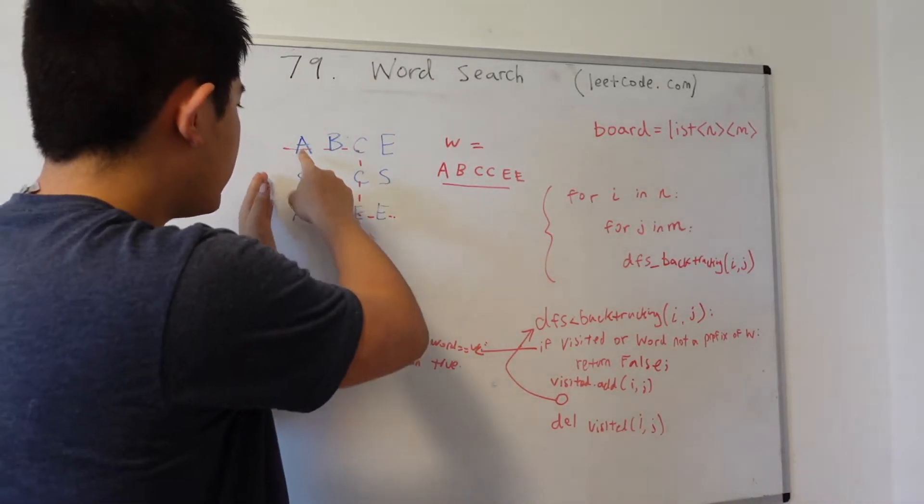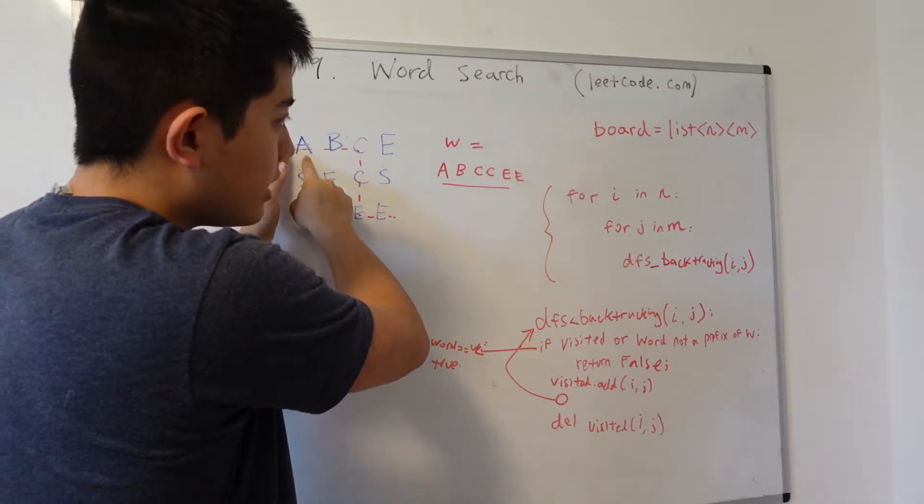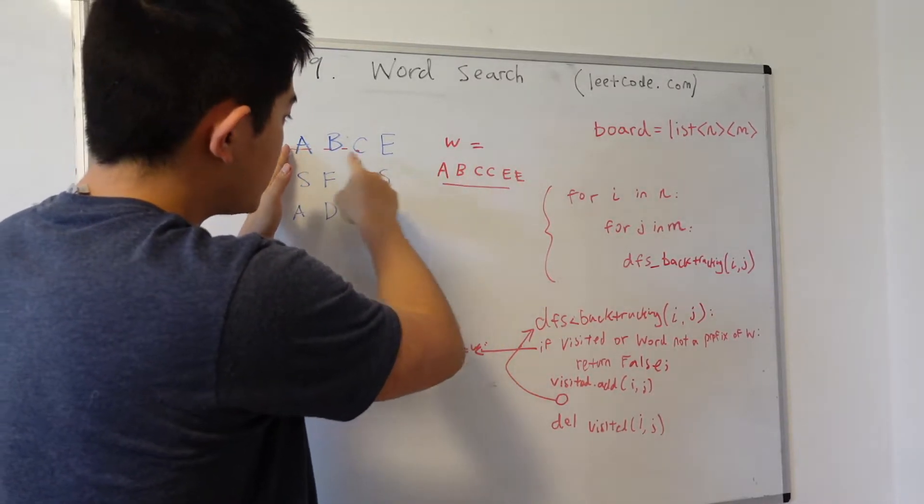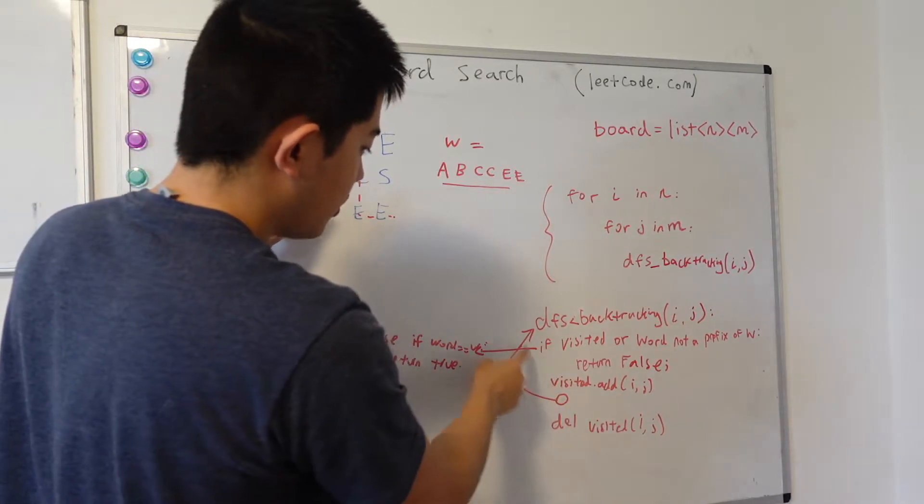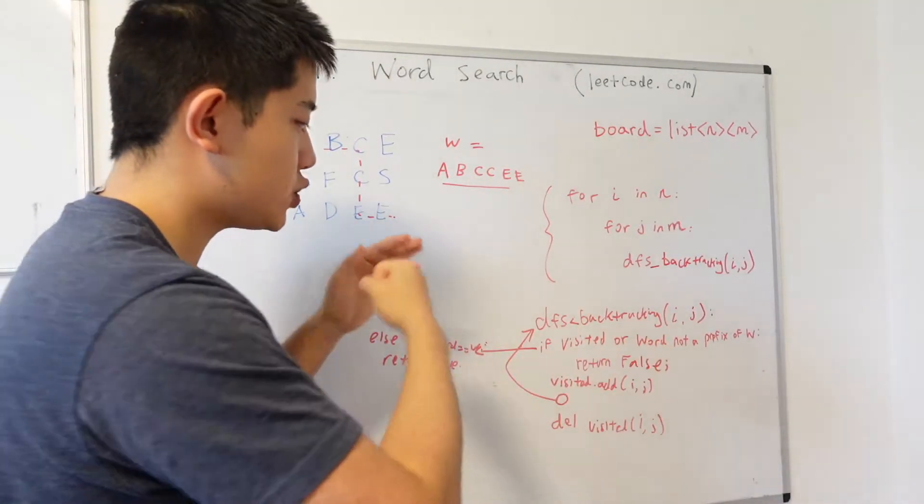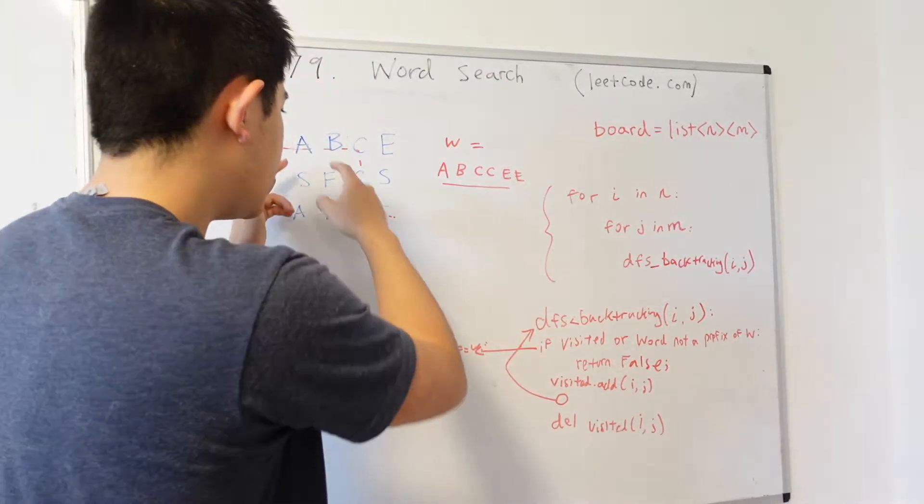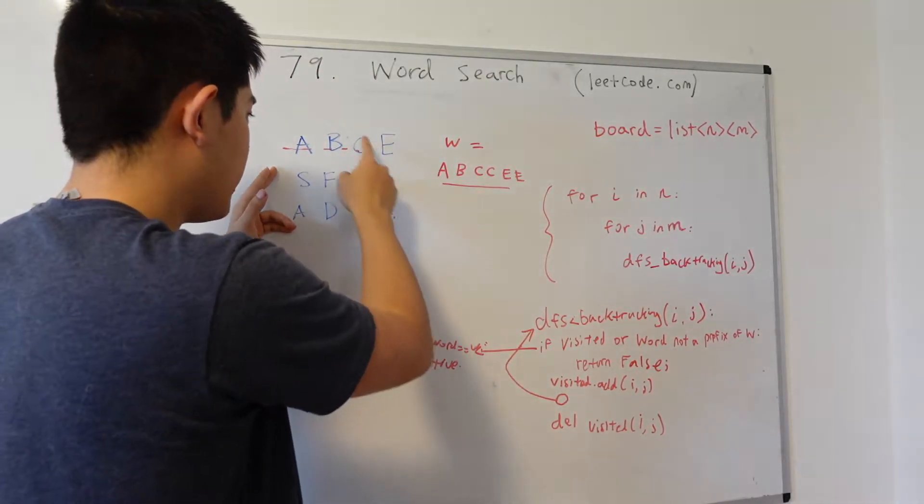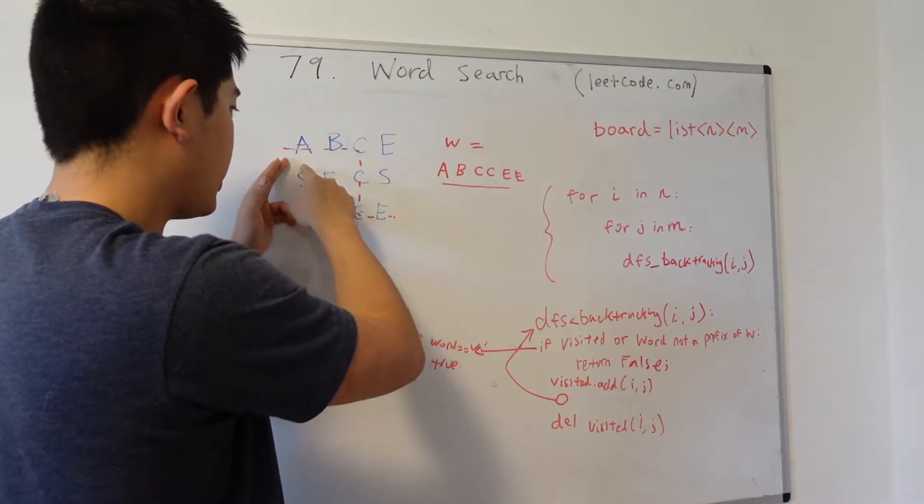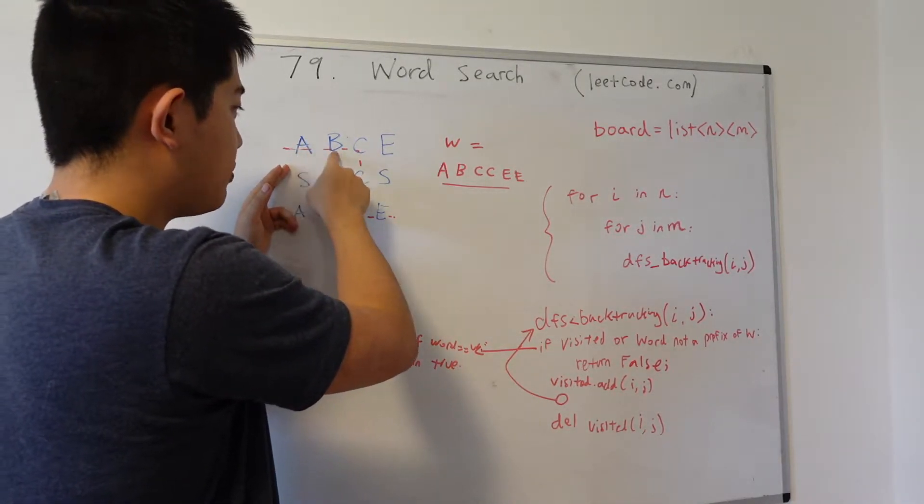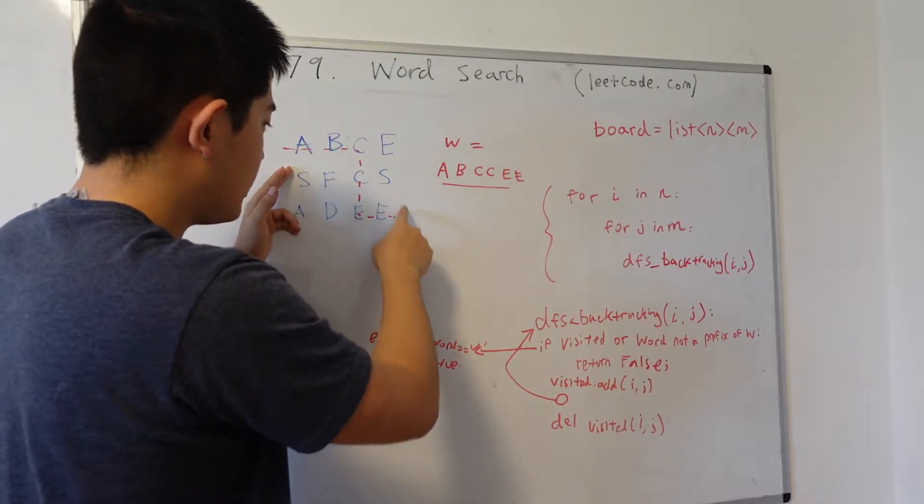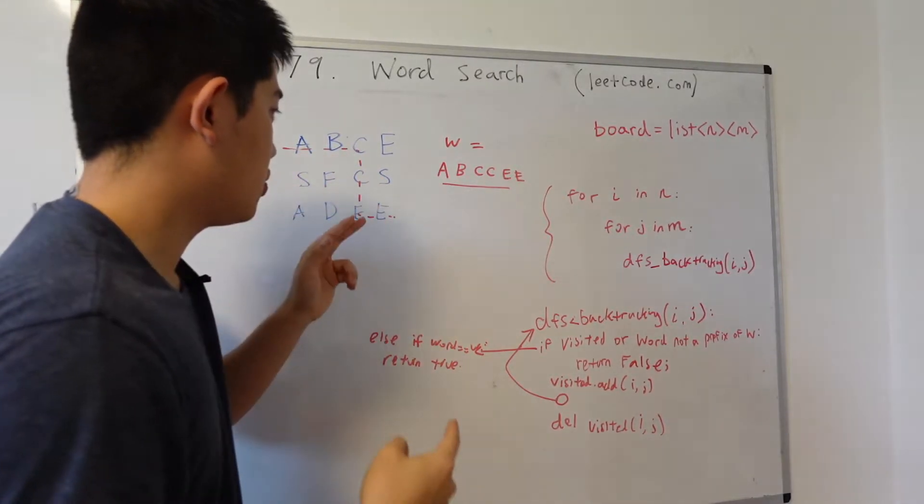So if we start depth first search on the letter A, A is a prefix of W. So we continue the DFS and we only append nodes. We only add children to the depth first search if the child is also a prefix of A. So in this situation, S wouldn't be added as a neighbor. Only B would have been added. And so that's the way the depth first search would work.